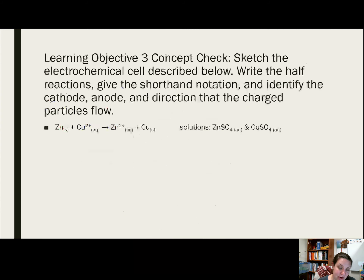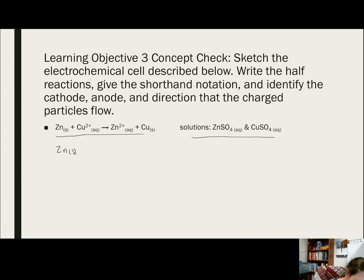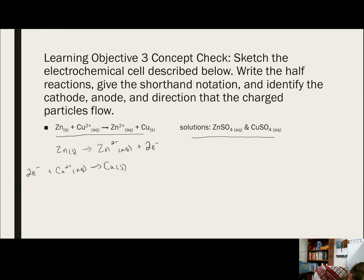Let's see how we're doing with this material. We want to sketch an electrochemical cell for the reaction described, write half reactions, give the shorthand notation, and identify the cathode, anode, and direction charged particles are flowing. First, we write our half reactions: zinc solid going to Zn²⁺, and Cu²⁺ going to copper solid. All elements are balanced, so we add electrons: two electrons on the oxidation half reaction and two electrons on the reduction half reaction. The top one is an oxidation process — so this is our anode. The bottom one is a reduction process — so it is our cathode.